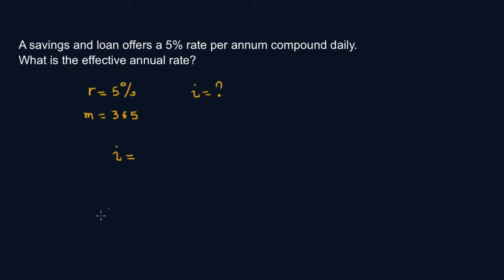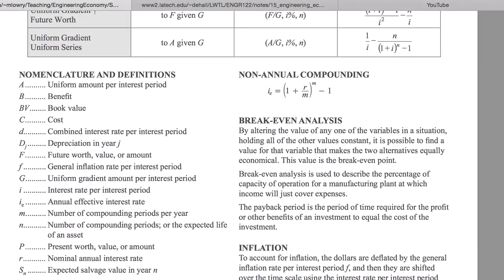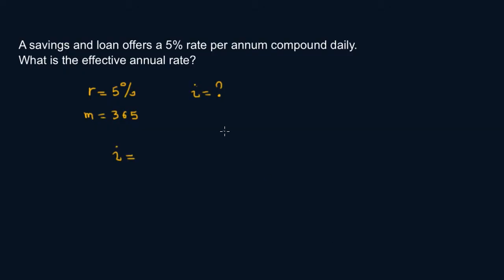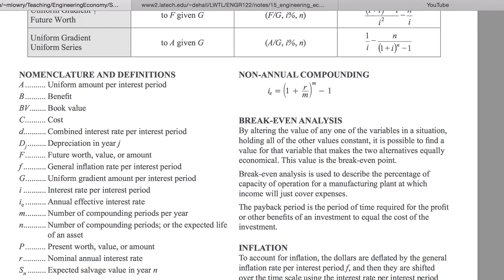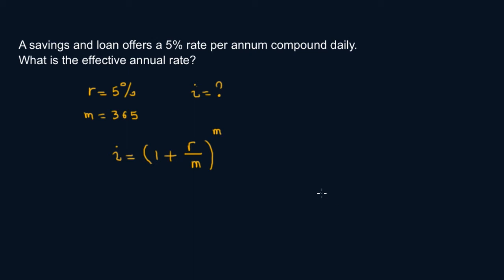So let's go to the formula again. IE is equal to 1 plus R over M to the power M minus 1, the whole thing minus 1.